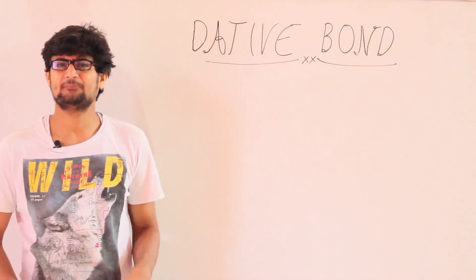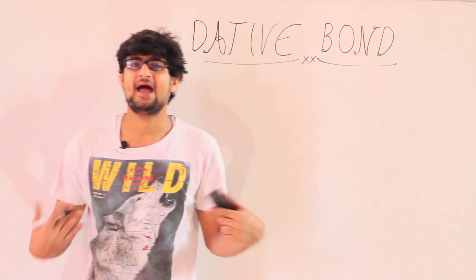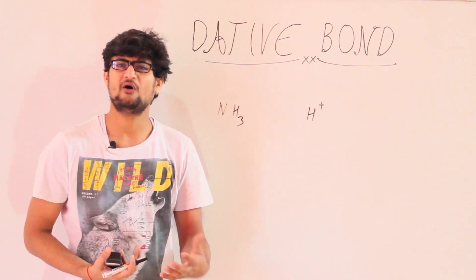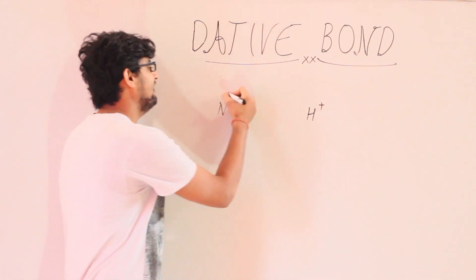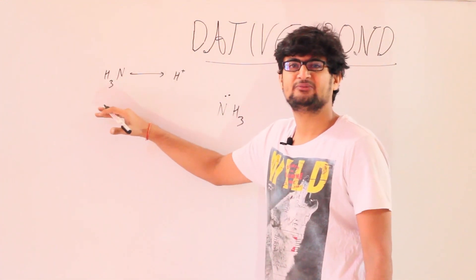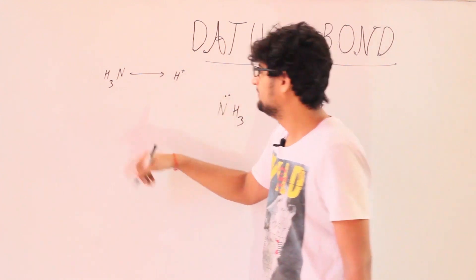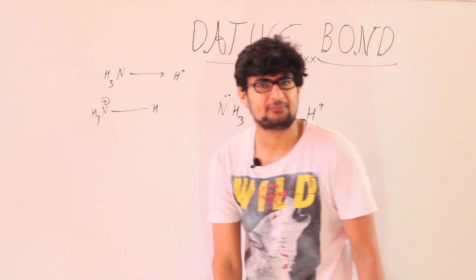This time we are going to take an example of NH3 and H+ and we are going to form ammonium ion. As you all know, H+ will have a vacant orbital while ammonia will have a lone pair of electrons. Now we can again show bonding between them either by an arrow or charge separation.